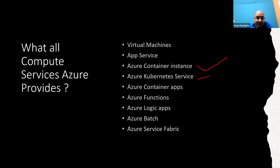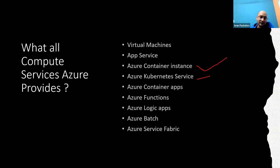Then we have AKS — Azure Kubernetes Service. We have covered AKS in pretty good detail. AKS is a PaaS service, a managed Kubernetes service for running containerized applications. It's used wherever you need an orchestrator — when there are so many containers and you need to manage them all. Kubernetes gives you that ability, and here the Kubernetes itself is managed.